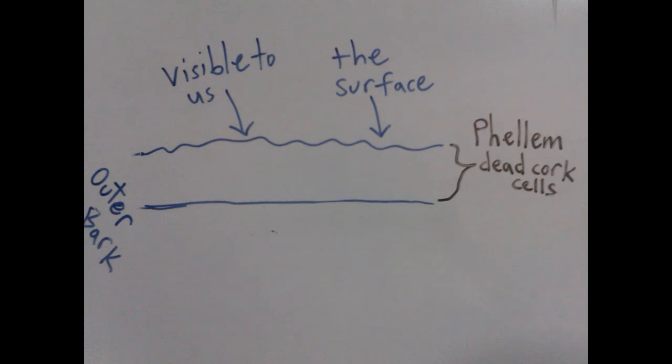The outside or external part of the bark, or phellem, is the layer usually visible to us, which we can also think of as the surface. It consists of non-living material or dead tissue, also called cork. The phellem is the outermost layer of the entire bark.